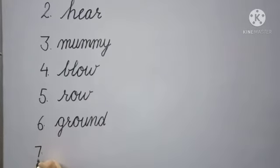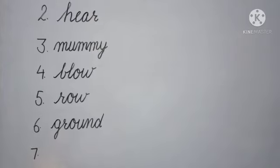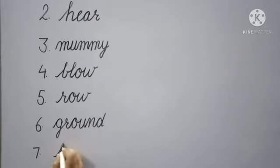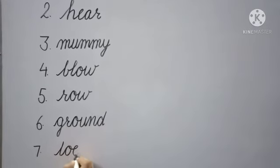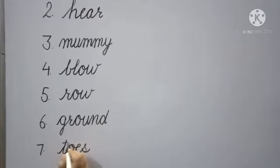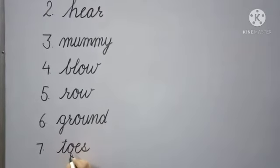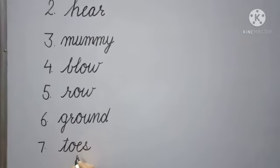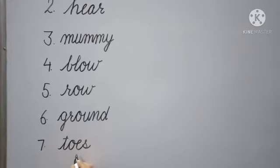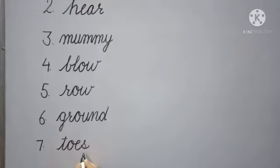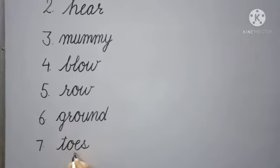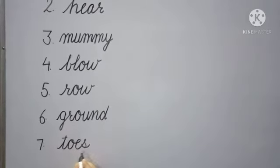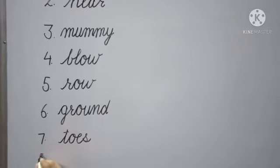Next, number 7: 'toes'. What is the spelling of toes? T-O-E-S, toes. Toes means 'paon ki fingers' (fingers of feet). What do we commonly call paon ki fingers? Toes. T-O-E-S, toes.